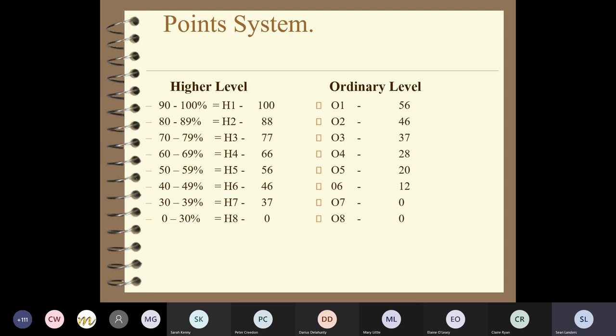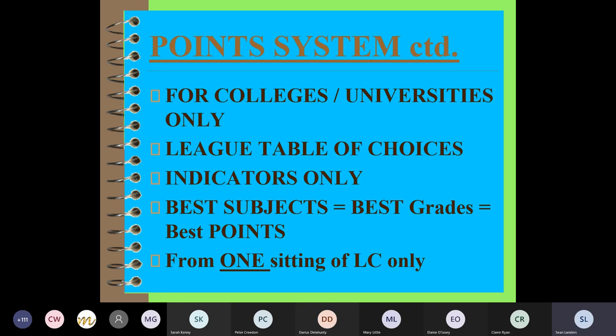The points system only applies to colleges and universities - it doesn't apply to apprenticeships, training, or many jobs and courses, only to universities and institutes of technology in Ireland or abroad. It's a league table - the number of people applying for a course sends the points up. If 60,000 students are all trying to get into one course with only 35 places, you can imagine what the points required would be.